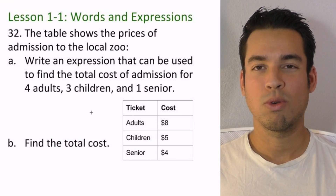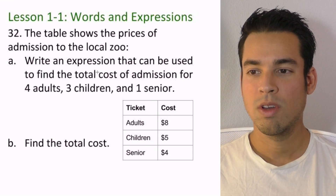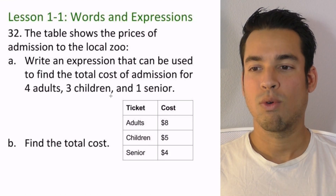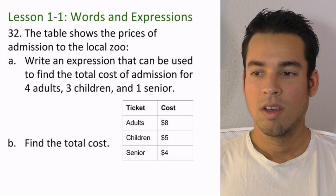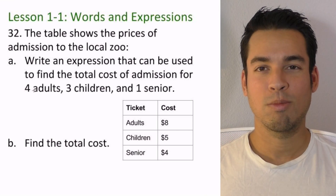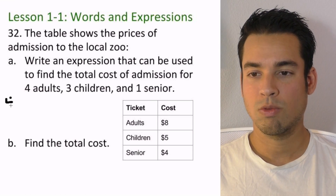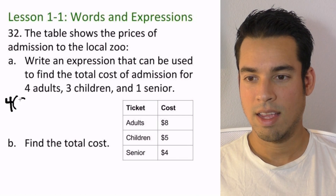Now let's move on to number 32. This is a word problem — the table shows the prices of admission to the local zoo. We need to write an expression that can be used to find the total cost of admission for 4 adults, 3 children, and 1 senior. We've got 4 adults, so we're taking 4 and multiplying it by the cost of an adult ticket, which is $8.